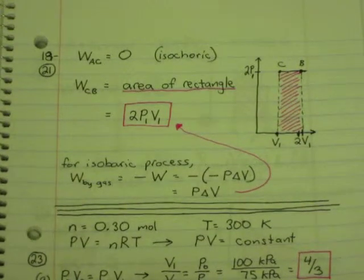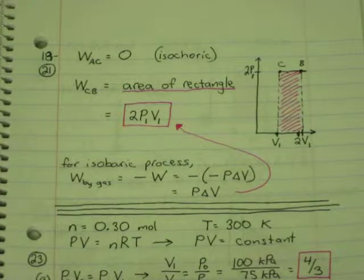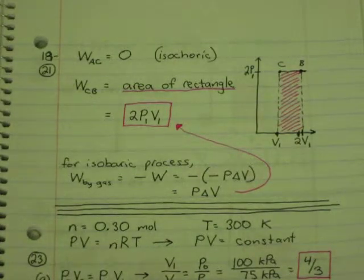Number 21, we're looking at the work done for a process that follows path A, C, B.